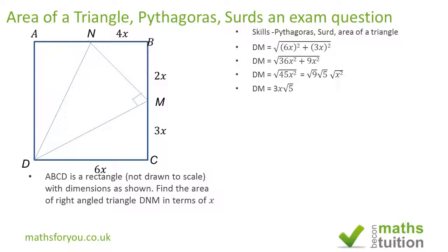Similarly for MN, we do 4x squared plus 2x squared. After simplification as before, we end up with 20x squared, because 16x squared plus 4x squared gives us 20x squared. And root of 20 is the same as square root of 4 times the square root of 5, and then we find the square root of x squared. So we end up with MN being 2x root 5.